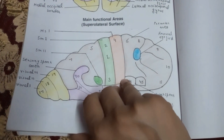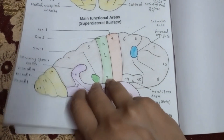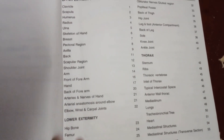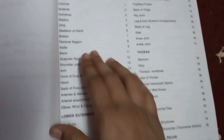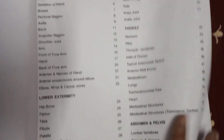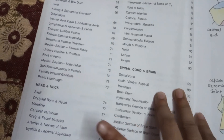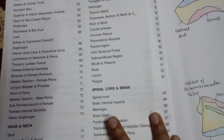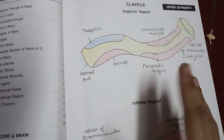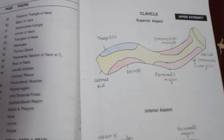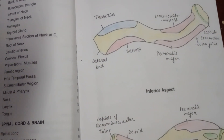There are a total of 104 pages in this book. This is the index where each and every part is differentiated under upper extremity, lower extremity, abdomen and pelvis, head and neck, and spinal cord and brain. So this video will help you out — thank you for watching my video, thank you, keep smiling!